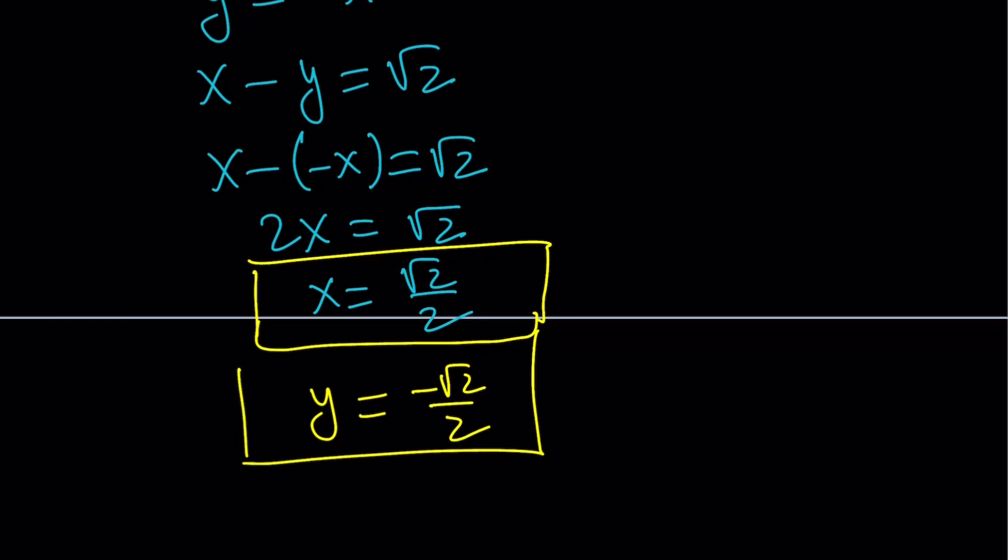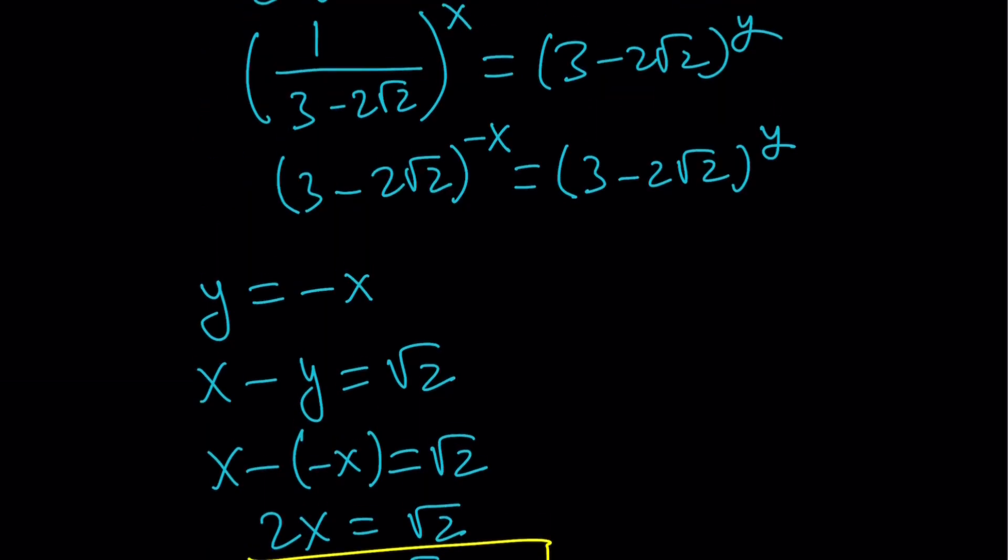Awesome. So that's going to give us the answer. And there's only one pair of solutions that satisfy this equation. Why? Because we only got one solution for x, that means there's one solution for y. Cool.